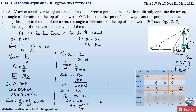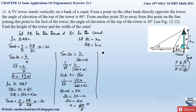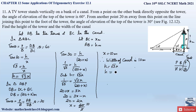Therefore x = 10 meters. Since x was assumed to be the width of the canal BC, the width of the canal is 10 meters. The height of the tower is h = √3·x = √3 × 10 = 10√3 meters. So the height of the tower is 10√3 meters.